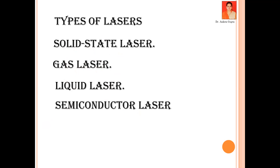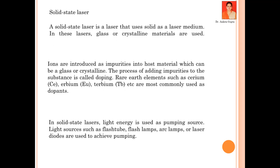Now, the ruby laser — we are taking a crystal, and chromium, which is transition metal ions, which is used for doping. So this is the way: you take a crystalline material, you take transition metal ions and rare earth elements, and you do doping. That is the ruby laser, which is a solid state laser.